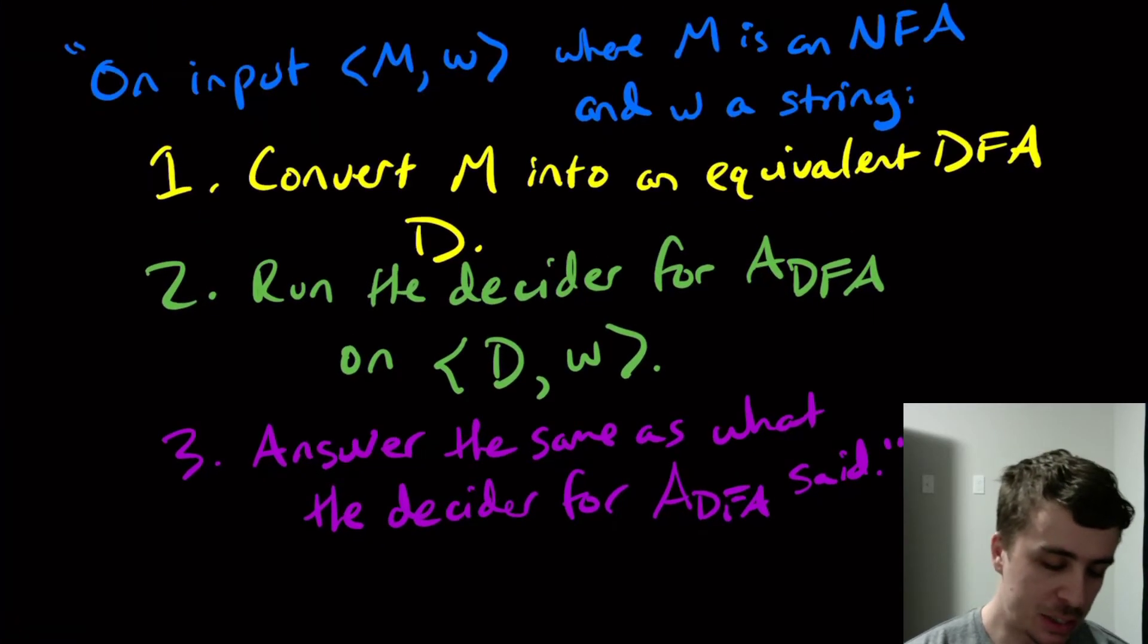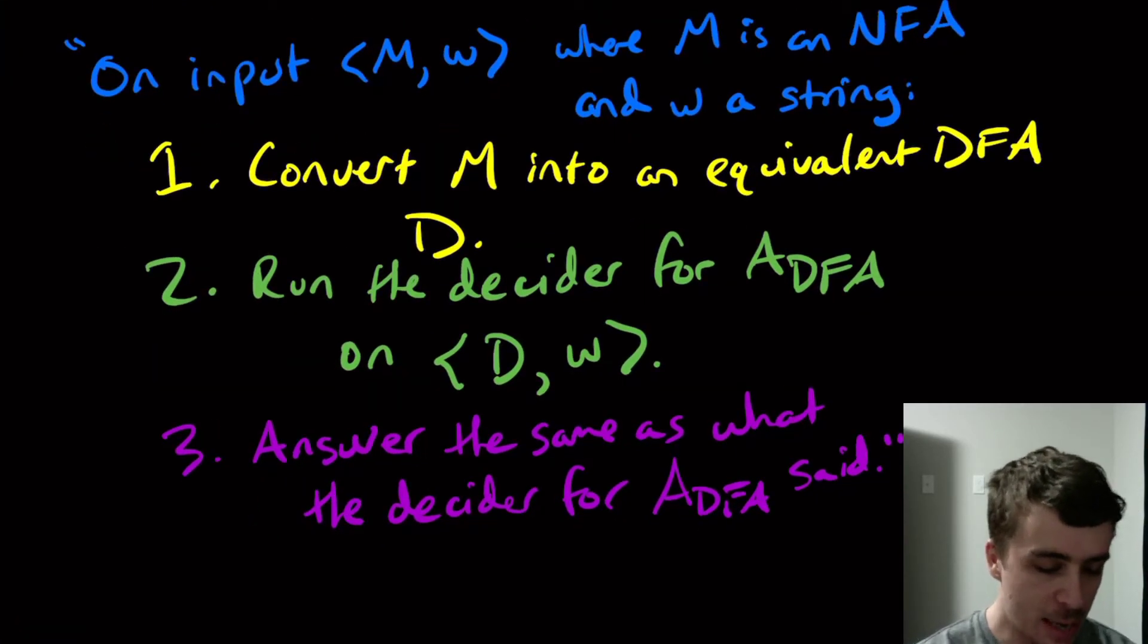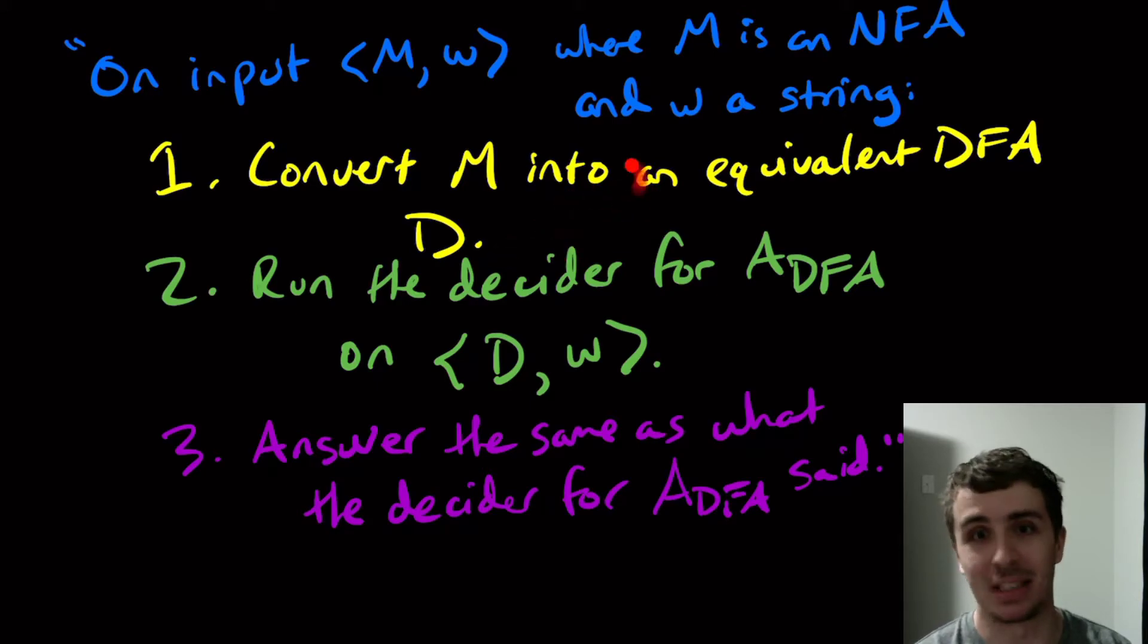So this clearly runs in a finite amount of time, because this step takes a finite amount of time. These two take a finite amount of time because it's a decider. Step two involves a decider, so it always halts. It takes a finite amount of time. And three clearly takes a finite amount of time. So overall takes a finite amount of time. And so A_NFA is decidable.